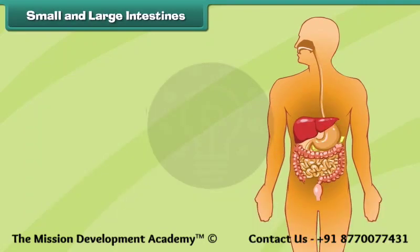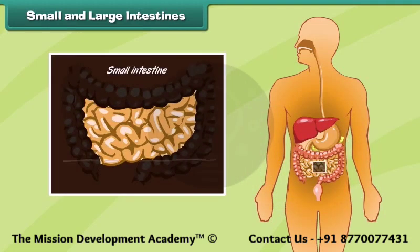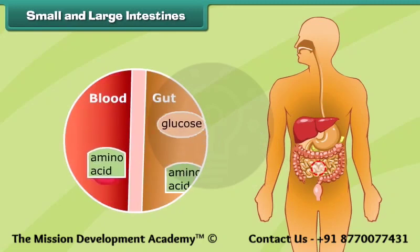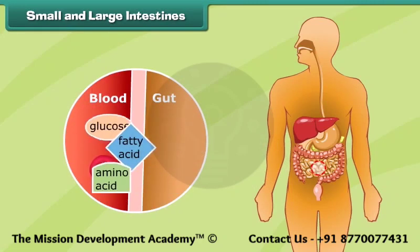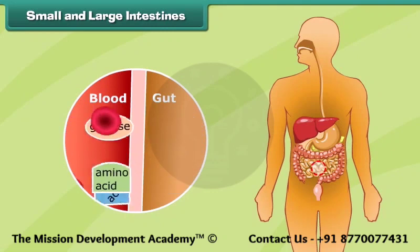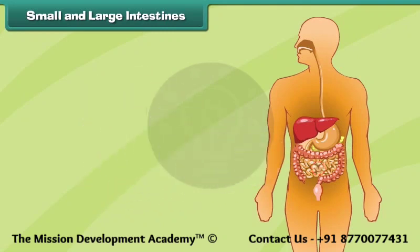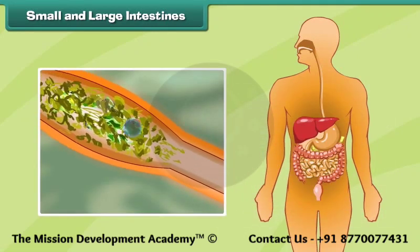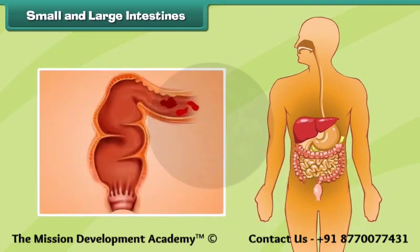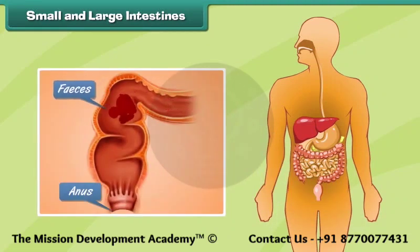Small and large intestines. The intestines are long tubes where the final breakdown and absorption of food occurs. The small intestine is a long, coiled tube where the digested food is broken down completely and absorbed. The large intestine absorbs water from the undigested food and also passes the waste food out from the body as faeces.